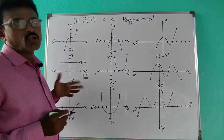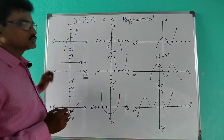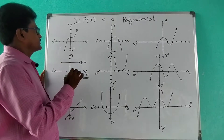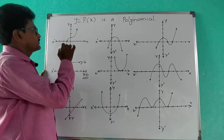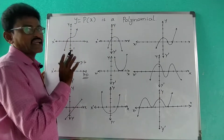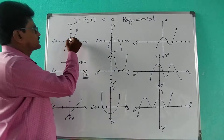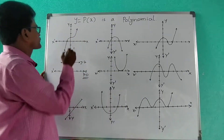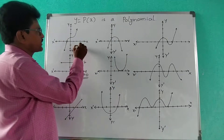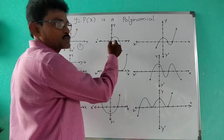y = p(x) is a polynomial. For this given graph, how many zeros are there? To find that, we just have to find how many places the graph is cutting the x-axis — that's the main thing. See here, this curve is cutting the x-axis at only one place, so the number of zeros for this is one. This is a parabola shape.